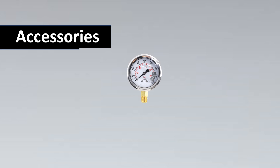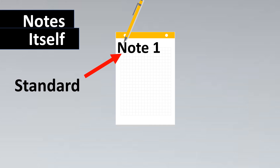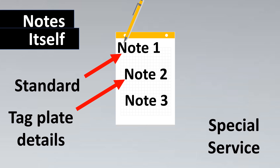The second sub-part is accessories. For a pressure gauge you might require a siphon or a snubber — used when there's pulsating discharge in the line, such as at a pump discharge. For a control valve you might require a gauge. Accessories depend on the instrument type. The third sub-part is the notes section, used for details that don't fit in the form — for example, NACE certification requirements, applicable client standards, tag plate details, or special service notes like hydrogen service requiring gold plating.